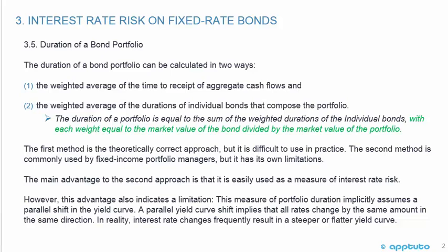The duration of a portfolio is equal to the sum of the weighted durations of the individual bonds, with each weight equal to the market value of the bond divided by the market value of the portfolio. You have to calculate the market values and use the market values of the bonds — that's really important.